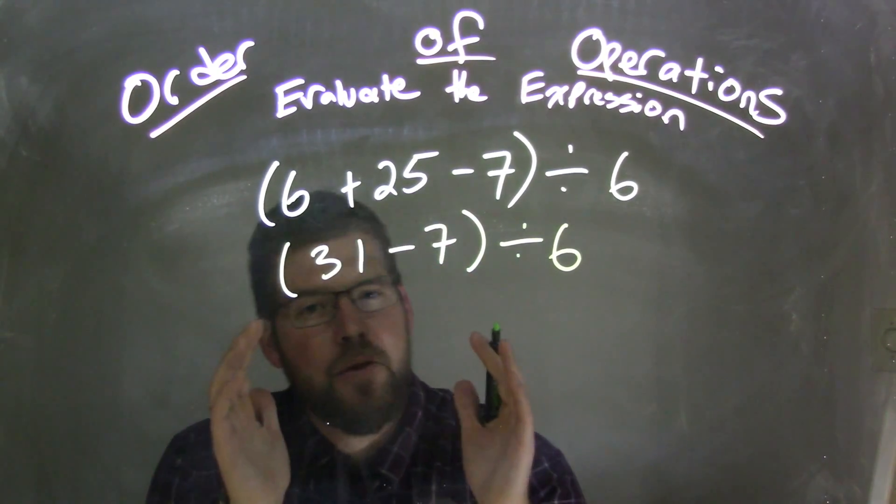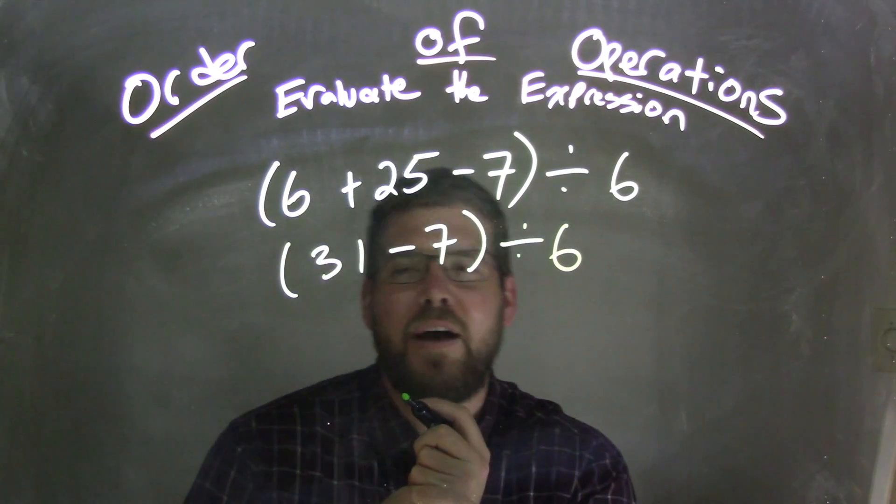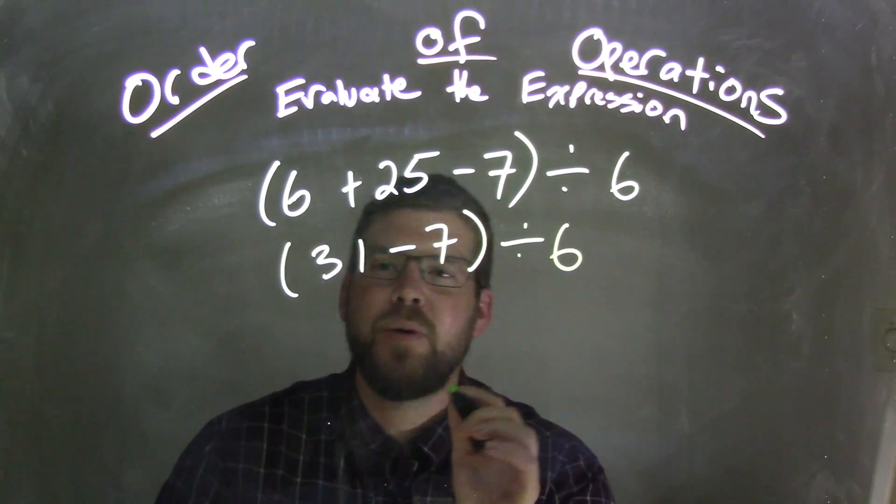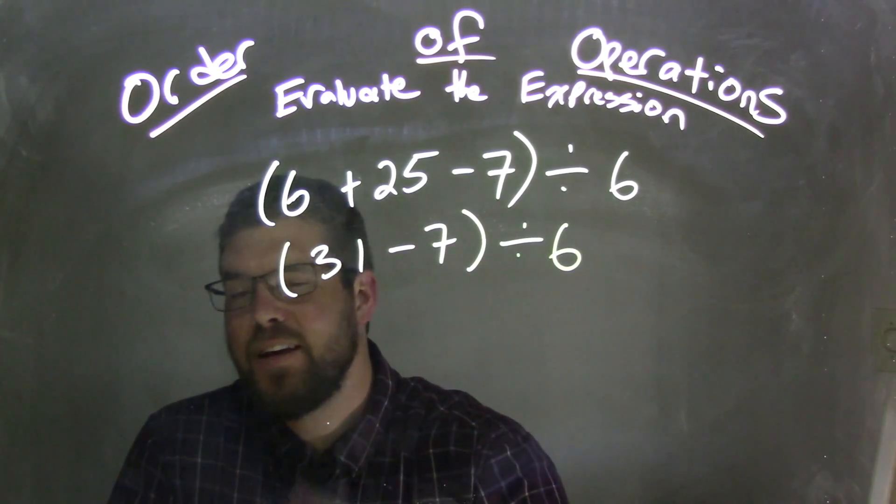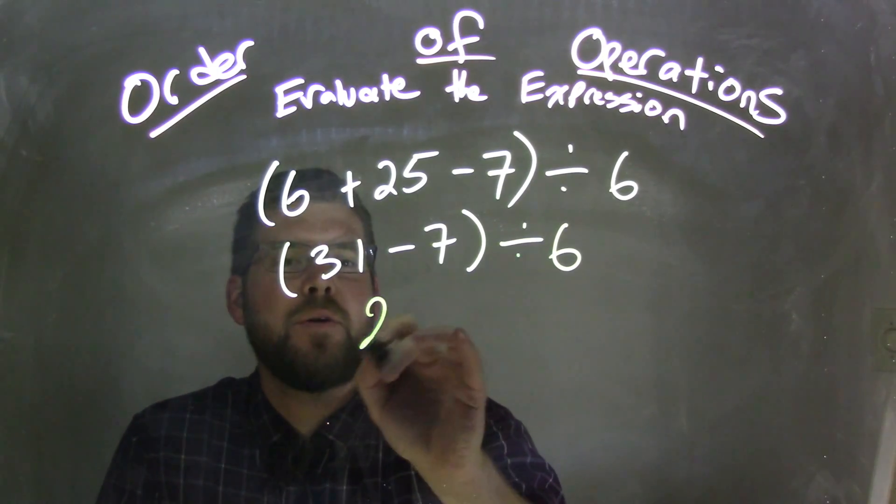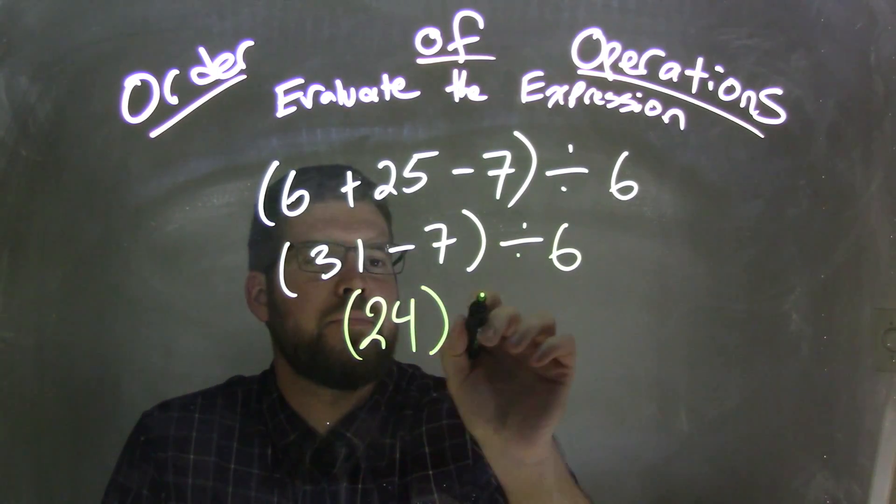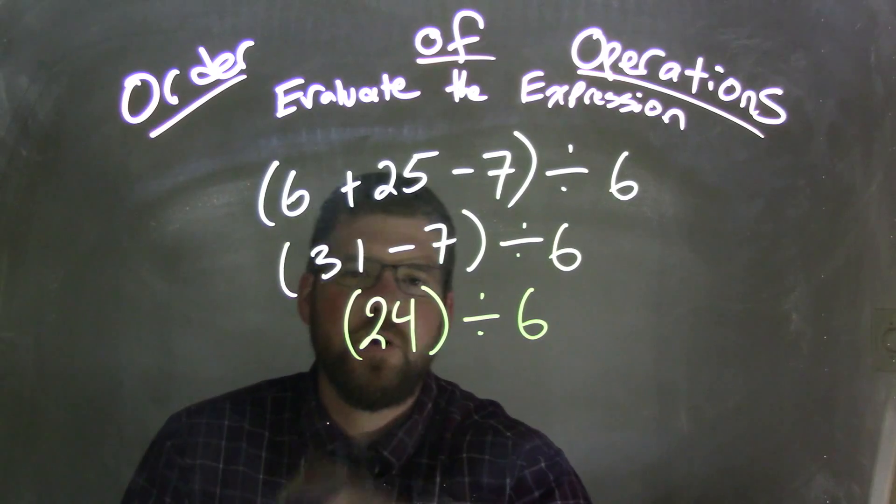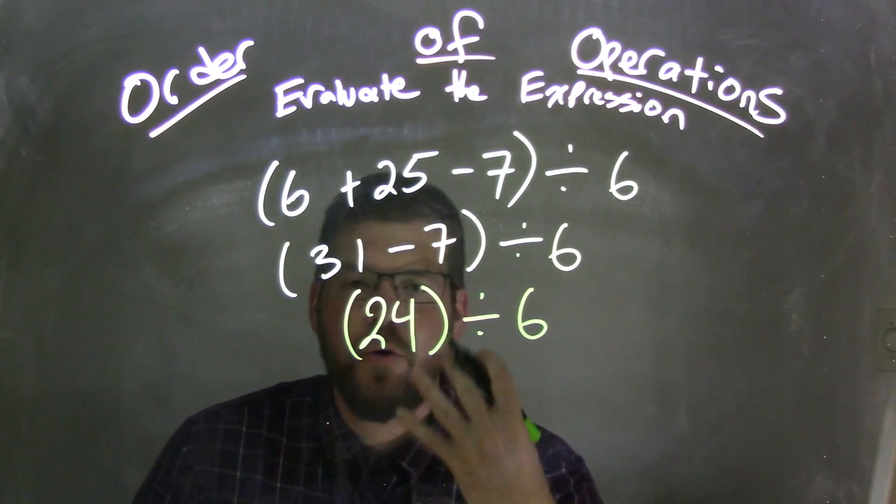31 minus 7 is still in those parentheses. We have to deal with that first, and what does that come out to be? Well, 31 minus 7 is 24, and 24 divided by 6 is good old 4,